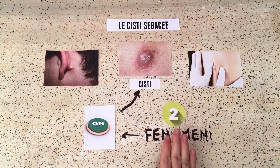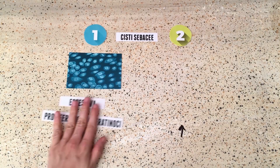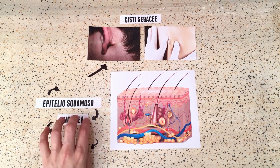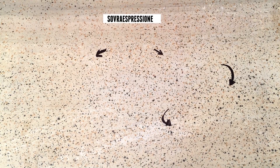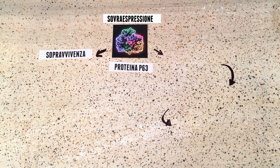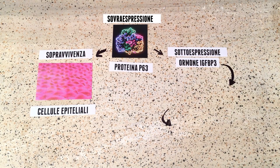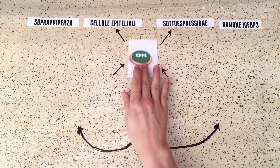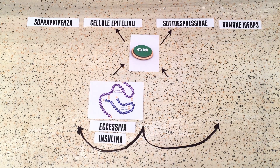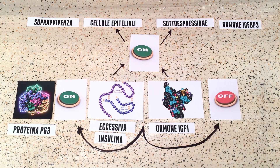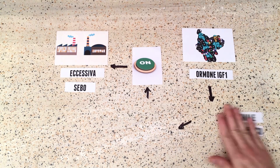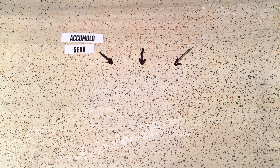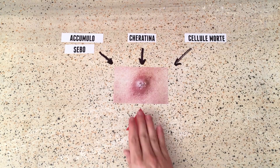Sebaceous cysts are caused by two distinct phenomena: on one hand, an excessive proliferation of keratinocytes, and on the other, an elevated production of sebum by sebocytes. The stratified squamous epithelium wedges into the underlying dermis, continuing to grow and forming the cyst lining. This is caused by the overexpression of P63 protein, which increases epithelial cell survival, and the underexpression of IGF-BP3, which controls cell replication. Both processes are promoted by excessive insulin and IGF-1, which stimulates P63 and depresses IGF-BP3. Excessive sebum production is induced by excess IGF-1, transmitting its lipogenic signal into sebocytes, allowing accumulation of sebum, keratin, and dead cells, causing the cyst to increase in size.